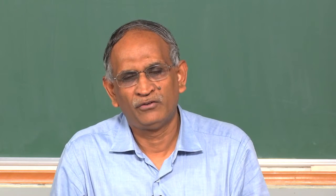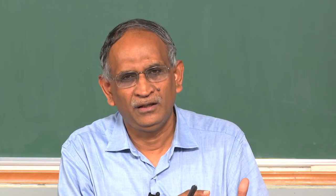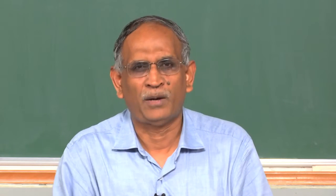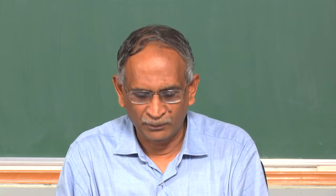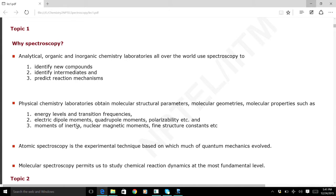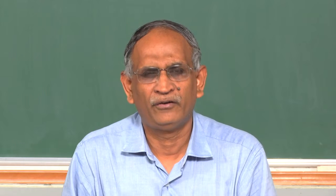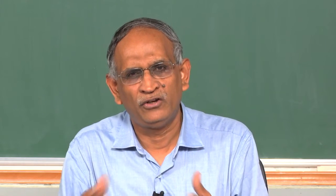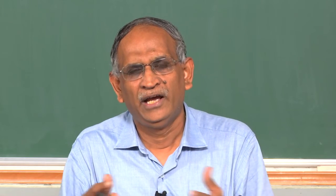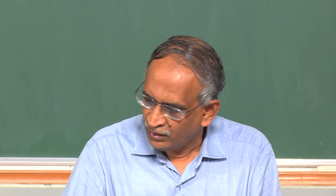Molecular electrical and magnetic properties are directly studied by associating the electric and magnetic fields of electromagnetic radiation with such properties and determining the changes that occur. Molecular geometries are fully determined by calculating the moments of inertia, the center of mass, and the moments of inertia about three mutually perpendicular axes, as well as nuclear magnetic moments, chemical shift, and spin-spin coupling constants encountered in nuclear magnetic resonance.